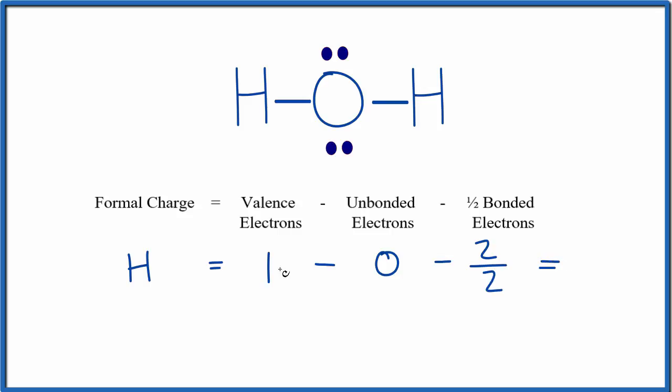And when we add these up, 1 minus 0 minus 1 is 0. So the formal charge on the hydrogen is 0. We'll put it up here in parentheses. This hydrogen is symmetrical, so we can also say that its formal charge is going to be 0.